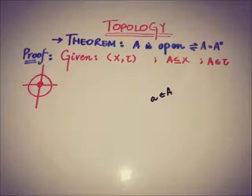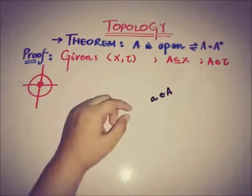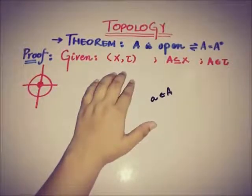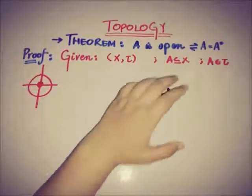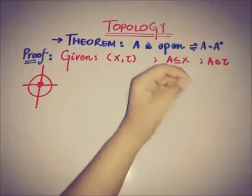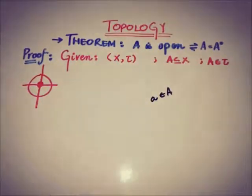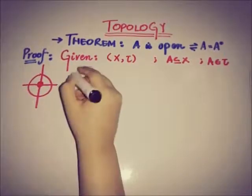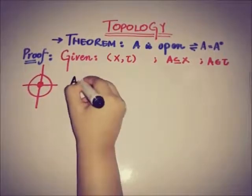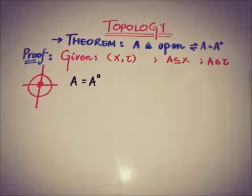We will prove this: given that X and tau is a topological space, A is a subset of X, and A is an open set, our target is to prove that A is equal to the interior of A.